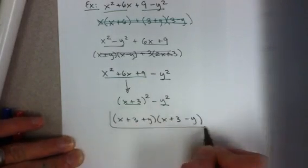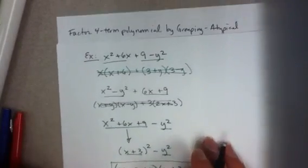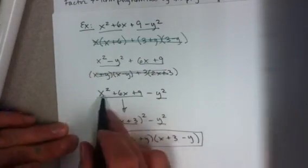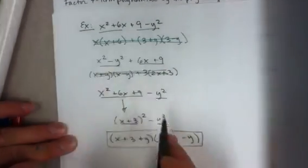And here it is. Finally, the factored form of this four-term polynomial using grouping, but grouping 3 and 1 instead of 2 and 2.